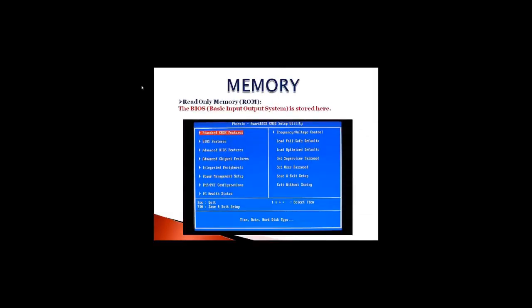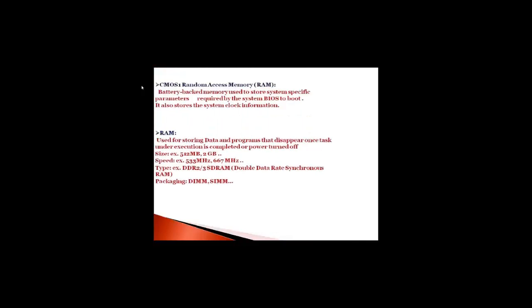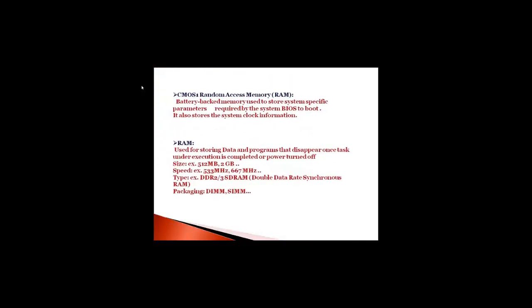There are different types of memory of a computer. ROM or read-only memory. It is primarily used for storing the BIOS or the basic input-output system. CMOS, random access memory. It's a battery-backed memory which is used to store system-specific parameters required by the system BIOS to boot. It also stores the system clock information. RAM. It is used for storing data and programs that disappear once task under execution is completed or power is turned off.